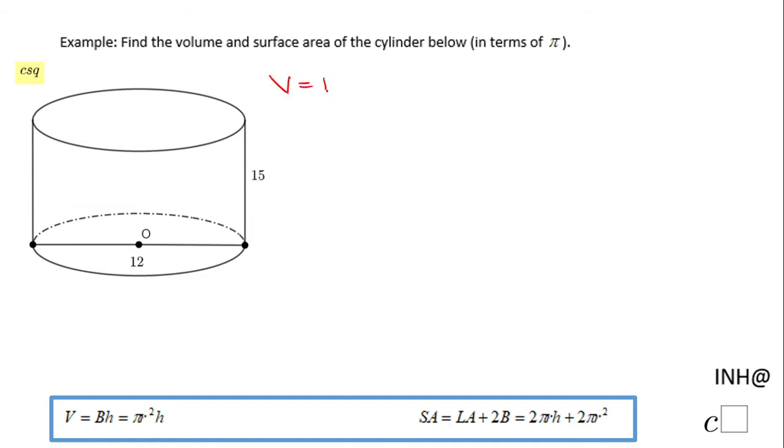Volume equals pi r squared h. Pi r squared is the area of the base times the height, so that's the reason these two are the same formula.